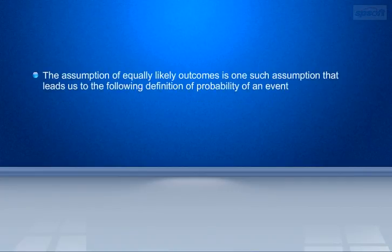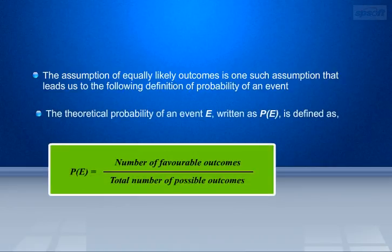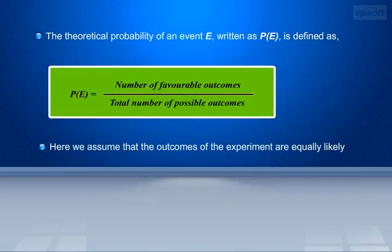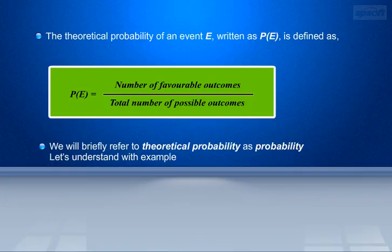The assumption of equally likely outcomes is one such assumption that leads us to the following definition of theoretical probability of an event. The theoretical probability of an event E, written as P(E), is defined as: P(E) equals number of favorable outcomes divided by total number of possible outcomes. Here we assume that the outcomes of the experiment are equally likely. We will briefly refer to theoretical probability simply as probability.